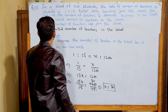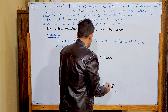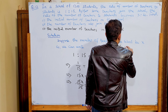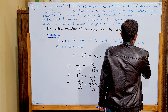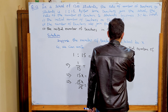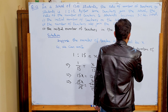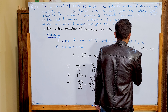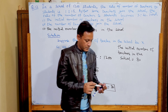The initial number of teachers in the school is equal to 80. This is the answer to Part 1.